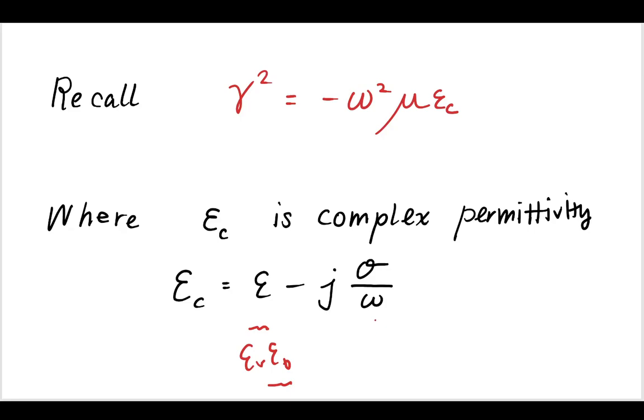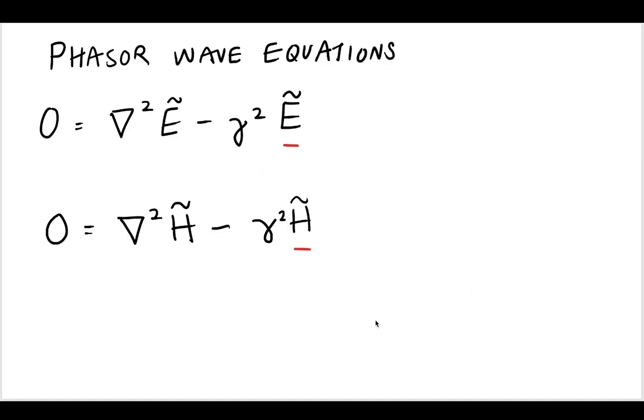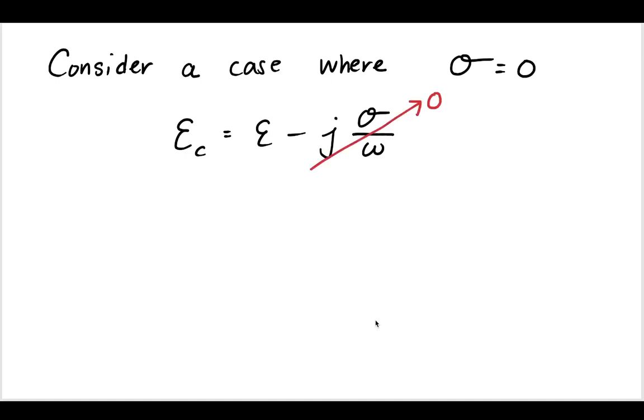So consider a case where we have a wave propagating in an environment where there is zero conductivity. So we're trying to solve these wave equations. And we're going to consider a case where we have no conductivity, which means that this imaginary part is going to go to zero. Now, if that's the case, we'll redefine epsilon sub c as just epsilon.